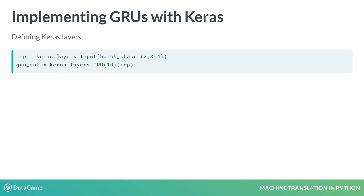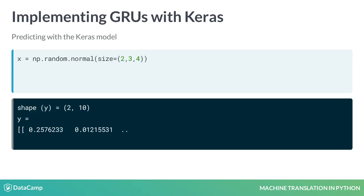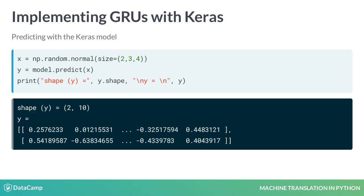Here, the sequence length is the number of words in the sentence. Then you define a GRU layer, which has 10 hidden units. Hidden size determines the size of the hidden state produced by the GRU. Finally, these layers are wrapped up into a Keras model, which produces the output of the GRU as the model output. You can then use the model to predict using model.predict and passing in some data which has the exact shape defined in the input layer.